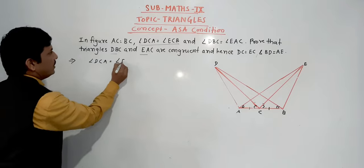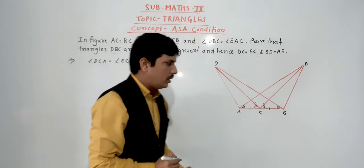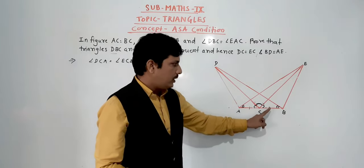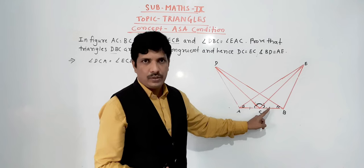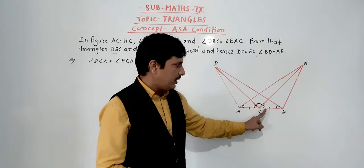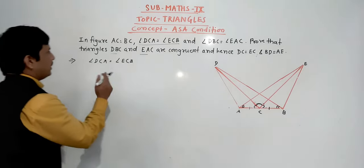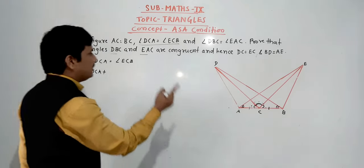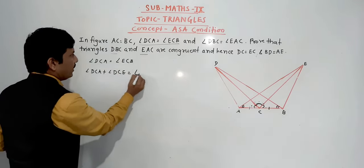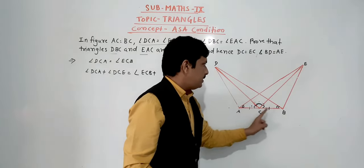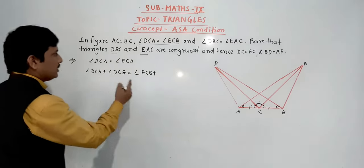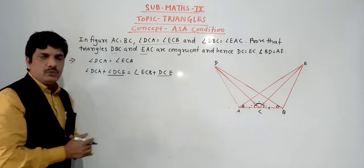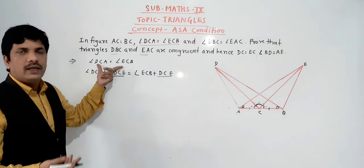Angle DCA is equal to angle ECB — this is condition one. Now, we will add a common part — angle DCE — to both sides. We are adding the same angle DCE on the left-hand side and the right-hand side. So the magnitude of both angles will remain the same. So: angle DCA plus angle DCE equals angle ECB plus angle DCE.